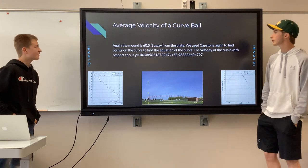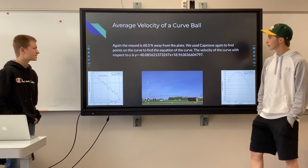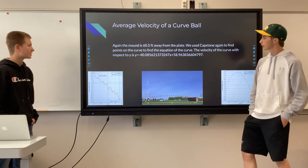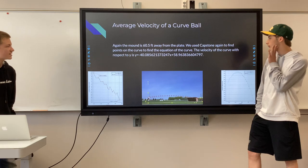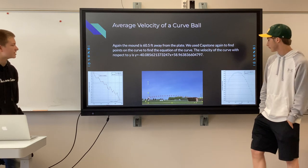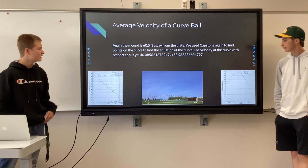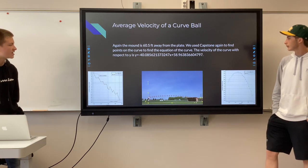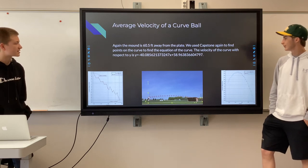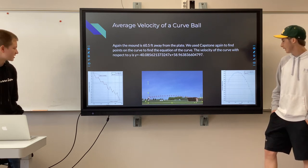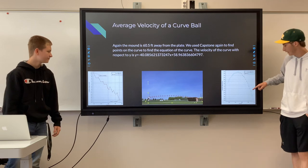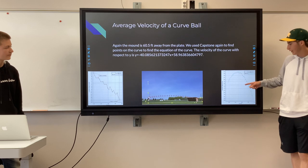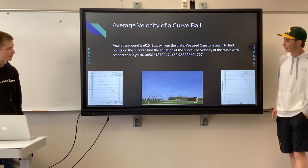Then we found the average velocity of the curveball. The mound is again 60.5 feet from the plate, and we used Capstone again to find the points on the curve. The velocity of the curveball with respect to y is y equals negative 40.085621373247x plus 58.963836604797. As you can see in our position functions, it's very different from the fastball — the fastball has a slight curve but is more straight, while the curveball is much steeper.